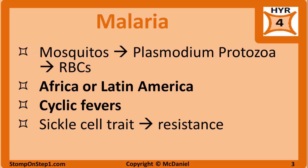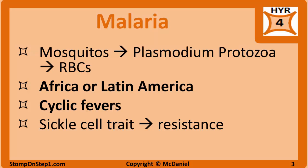Symptoms occur when mature schizonts rupture erythrocytes, releasing immature merozoites. Anemia may be present due to the rupture of red blood cells. Question stems almost always mention recent travel to a place like Africa or Latin America, as malaria is not endemic to the United States. One interesting correlation is that sickle cell trait offers some resistance to certain malaria species, which is why sickle cell trait and disease is much more common in areas where malaria is endemic — it actually gives a survival advantage due to its anti-malarial property.